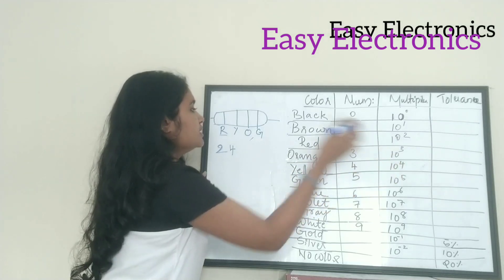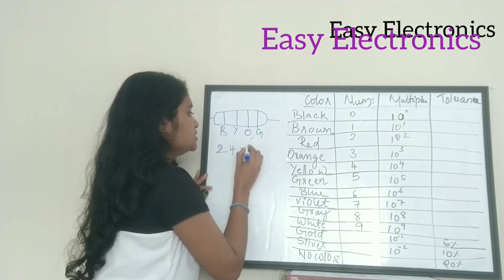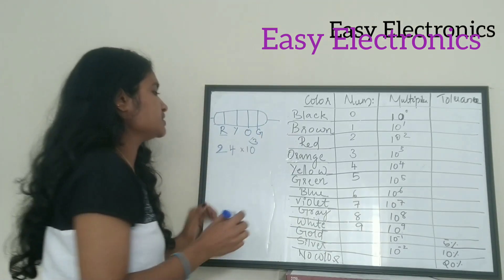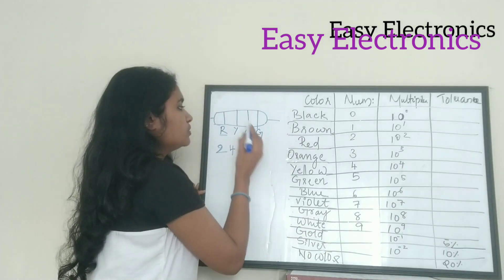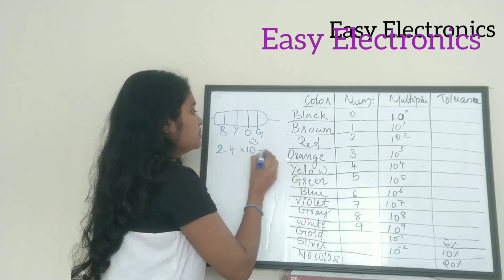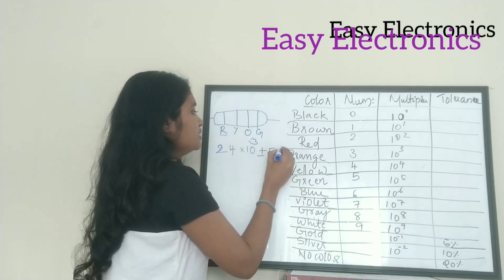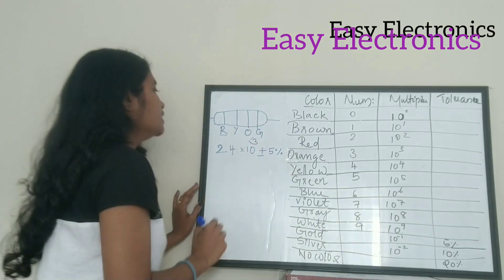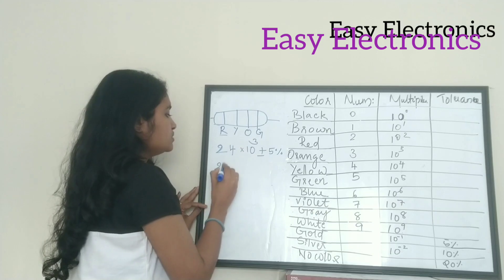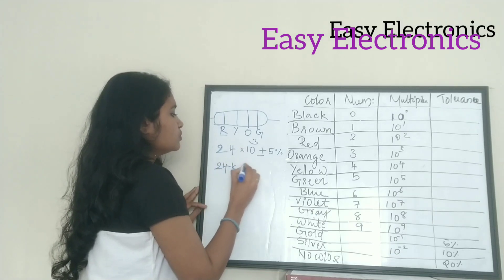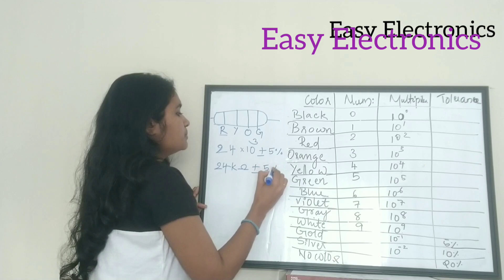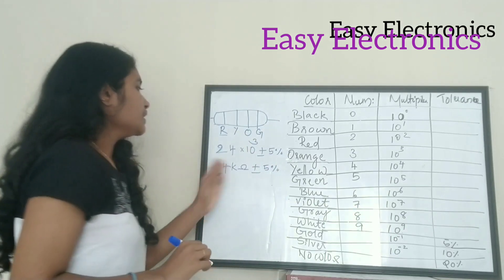The orange color indicates the multiplier, which is 10 raised to 3. So we write into 10 raised to 3. The last color is gold, which has a tolerance value of 5%. So the value is 24 × 10³ = 24 kΩ ±5%.